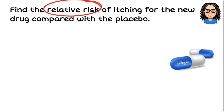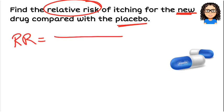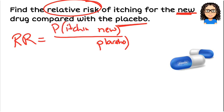Relative risk is a key phrase to know — it usually means an A-level question. We want to find the relative risk of itching for the new drug compared with the placebo. As soon as we see relative risk, think about comparing the risk of the new drug with the placebo. A relative risk is always a ratio of absolute risks.